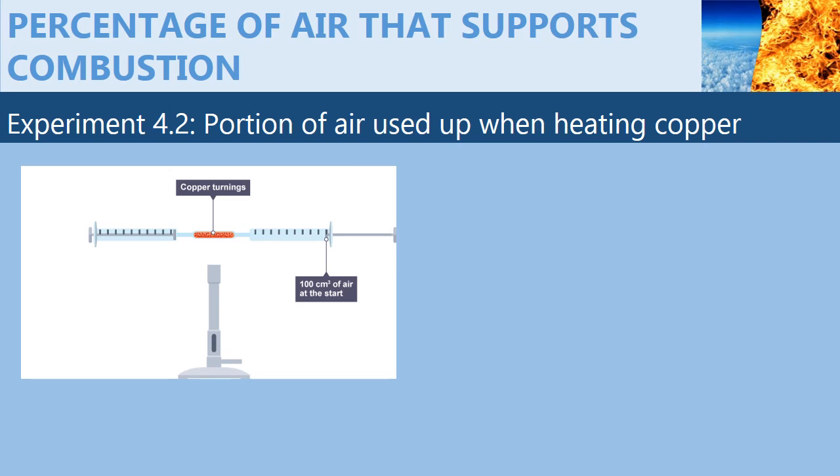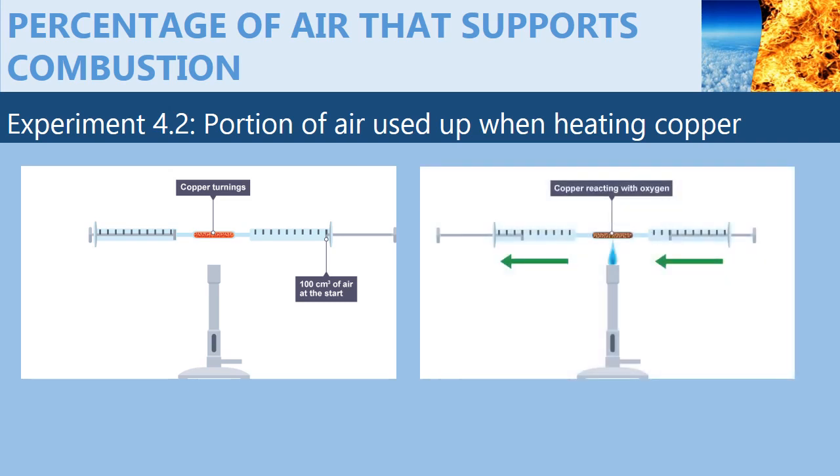To start off the experiment, you light up the Bunsen burner and start heating the copper turnings. At the same time, as shown in this diagram, you start pushing the syringe piston back and forth. You'll push this syringe so that all the air in this syringe goes to the other syringe, and then you push it back so that all the air goes through again.